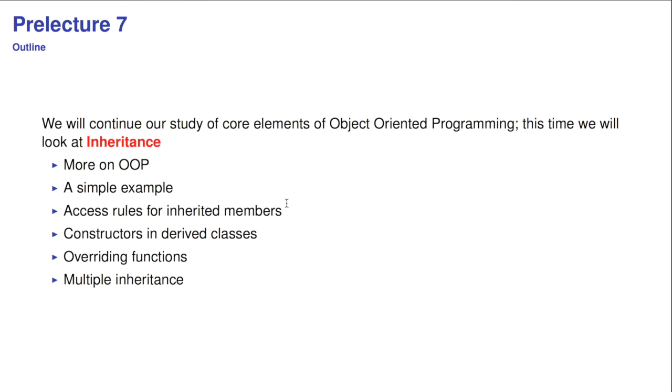So the structure of today's lecture is the following. We will discuss a little bit more about the context on object-oriented programming, look at a simple example, examine access rules for inherited class members, constructors in derived classes, overriding functions and multiple inheritance. Some of these may not yet make sense to you, but they will be hopefully by the end of the session.